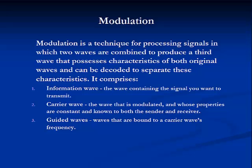Recall from previous modules that electromagnetic energy is a field that contains both electrical and magnetic waves combined, and recall that uncontrolled electromagnetic energy radiates freely and chaotically in many directions. Additionally, left uncontrolled, electromagnetic energy, and thus the signals they carry, continually interfere with each other, making communication impossible. So one way to control signals and to ensure that they arrive at their intended destination in their intended form is to use a signal processing technique called modulation.